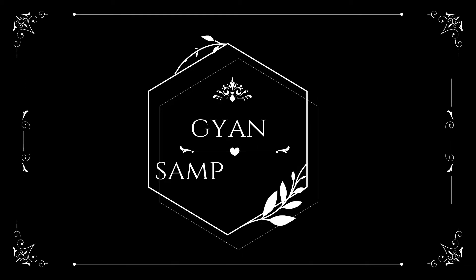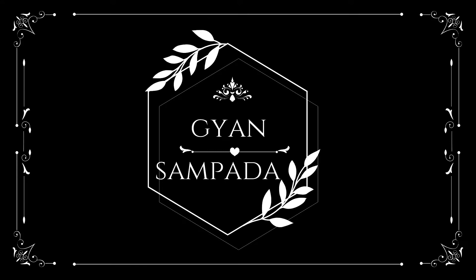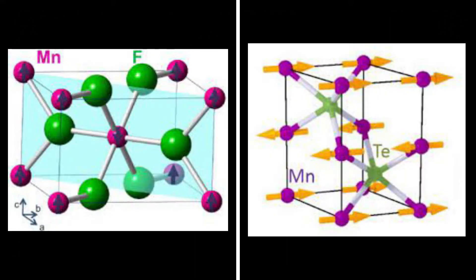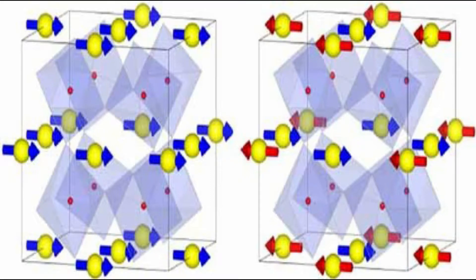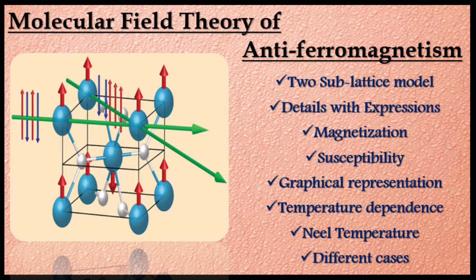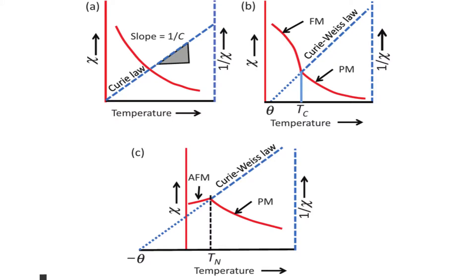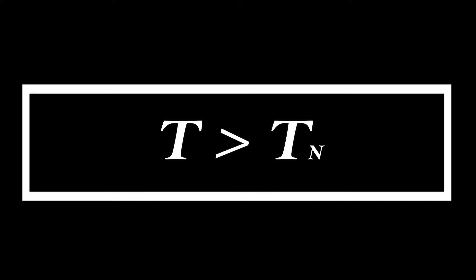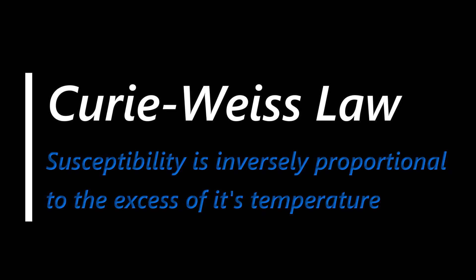Hello everyone and welcome back to my channel Gyan Sampala. In our previous class we started to discuss about the two sub-lattice model, which is the molecular field theory of antiferromagnetism, where we had an introduction and some important details about the model. We were also discussing the temperature dependence on such systems, and in the last class we studied what happens when temperature is greater than Neel temperature — we saw that it obeys Curie-Weiss law.